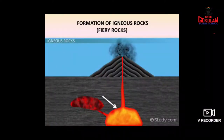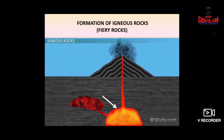So here magma gets pushed upward towards the surface of the earth. When it reaches the surface, it is coming into the earth's atmosphere where the temperature is at room temperature. So what happens to this molten magma? It will turn to solid — when it is cooling, it will turn to rocks. It will turn to hard substances, and these hard substances are called rocks. In this way, rocks are formed.